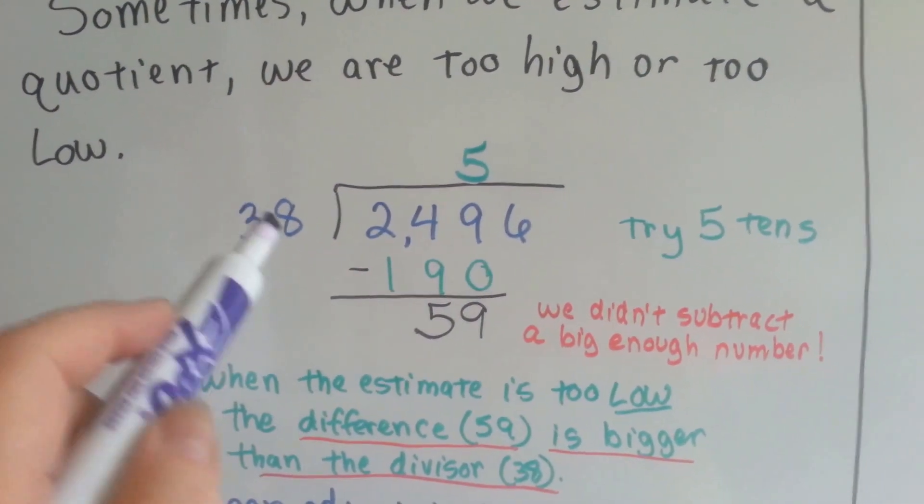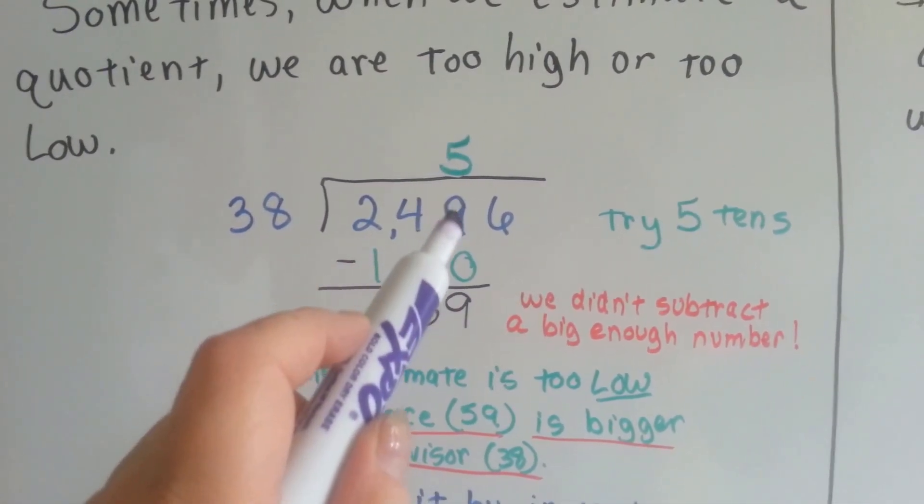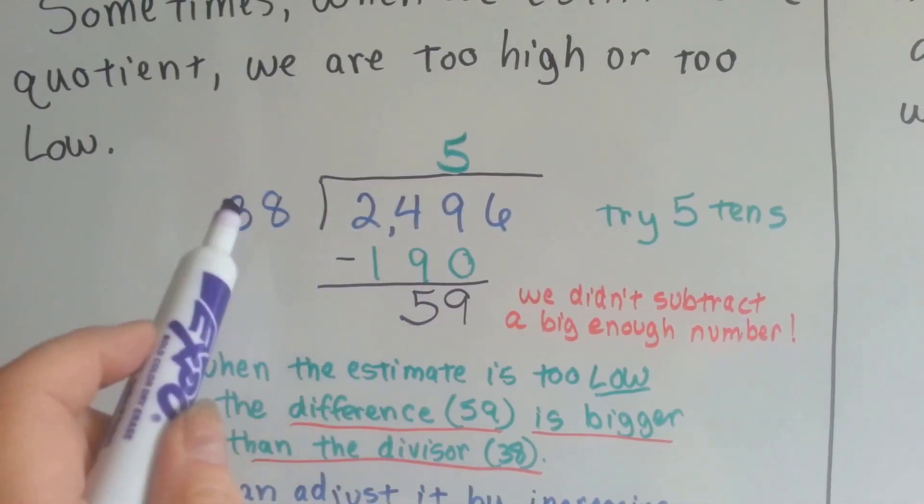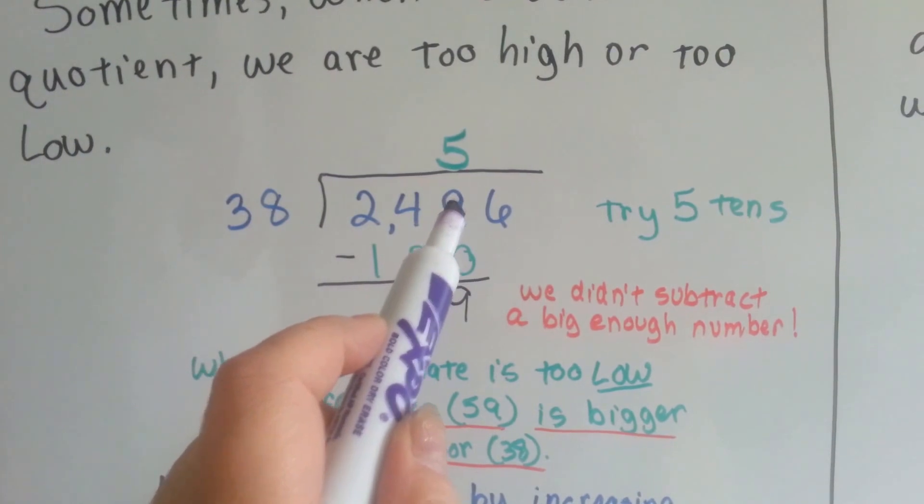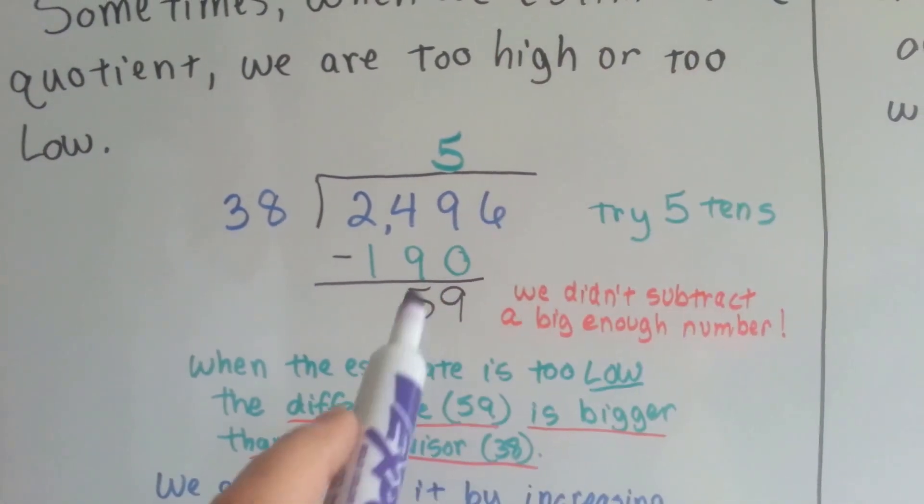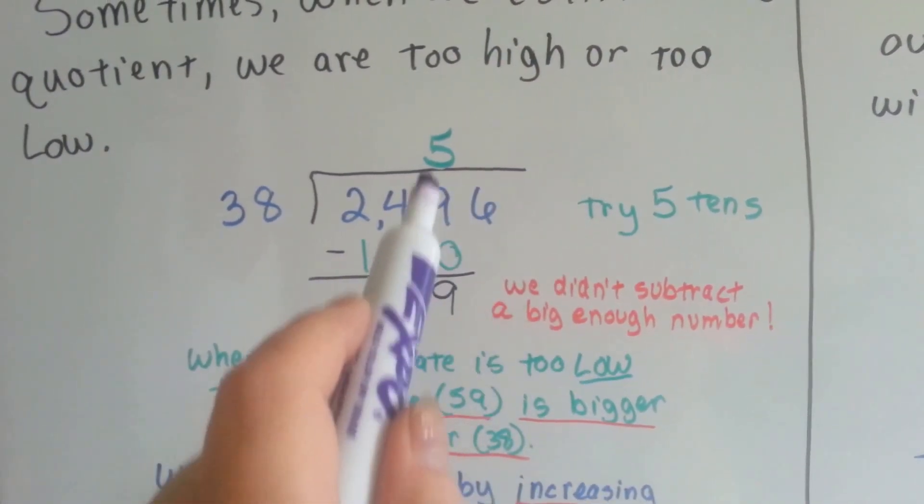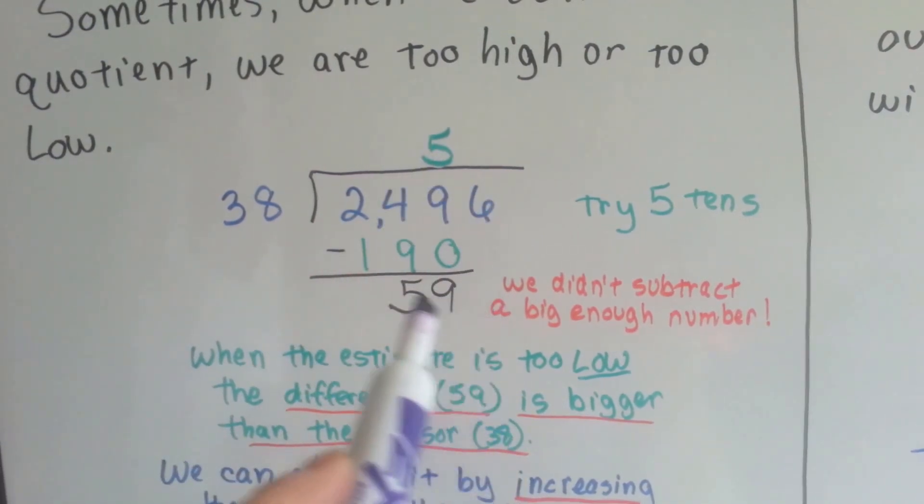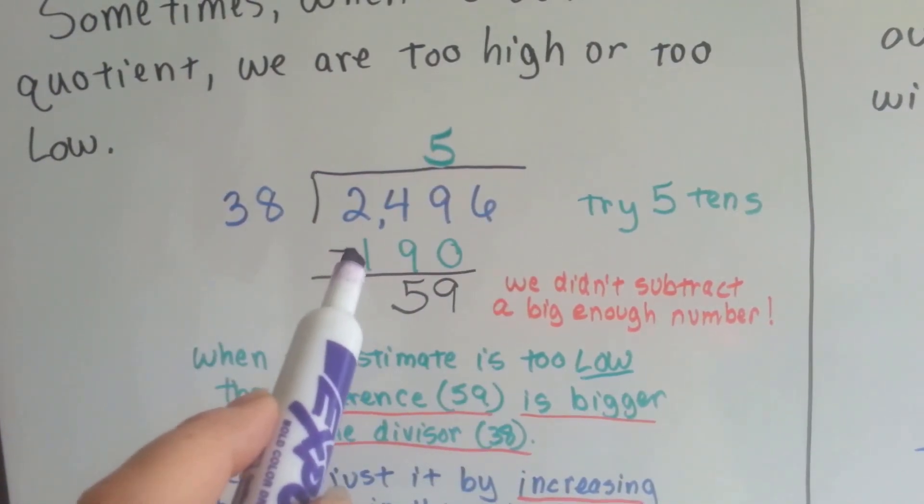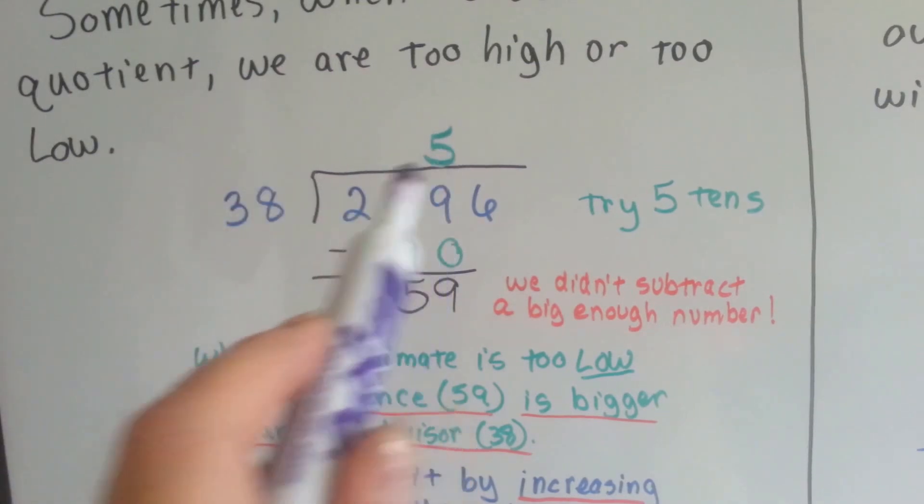In this one, I estimated 5 to go above the 9 here. 38 can fit into the 249 five times. I tried putting 5 tens here, that's the one space, and I got 190 when I did the multiplication.